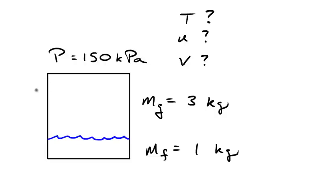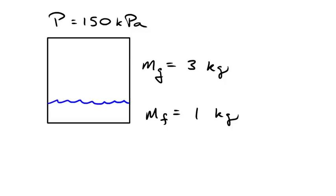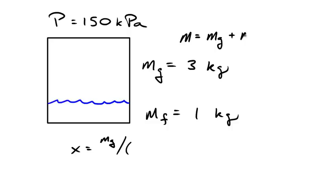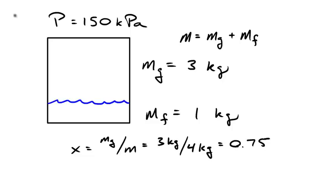To answer these questions, we need to know the quality of the system — the fraction of mass in the vapor phase. Quality is defined as the mass of the vapor divided by the total mass. The total mass is the vapor plus the liquid, so we have three kilograms divided by four kilograms, giving a quality of 75 percent.